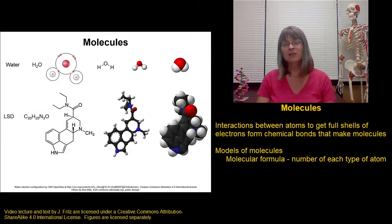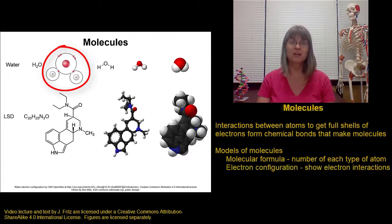What the molecular formula doesn't tell us is anything about how these atoms are arranged. How are they connected to each other? So that's where some of the other forms of models are helpful. We can have electron configuration models that actually show us the electrons that are involved in which electrons are being shared between atoms.